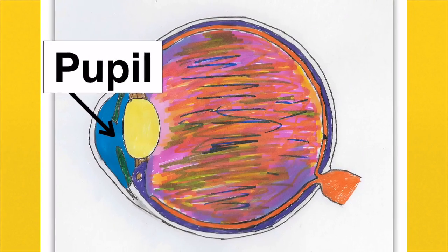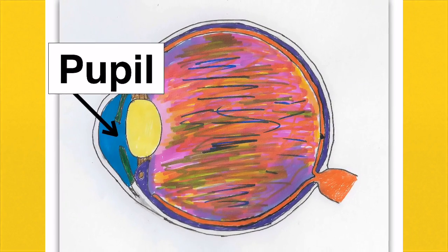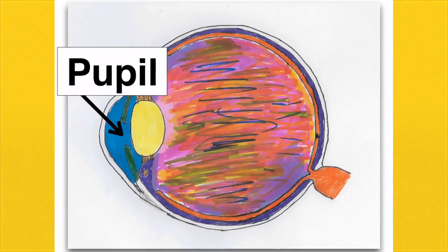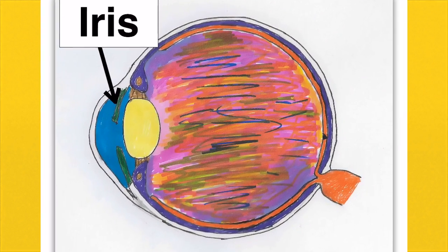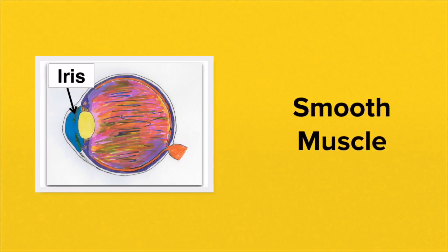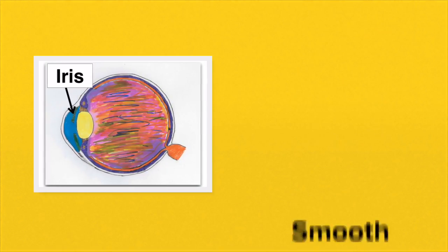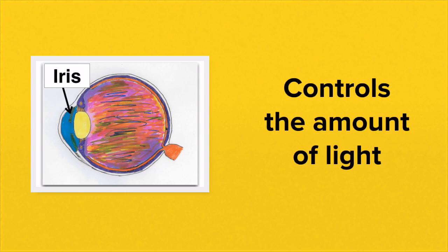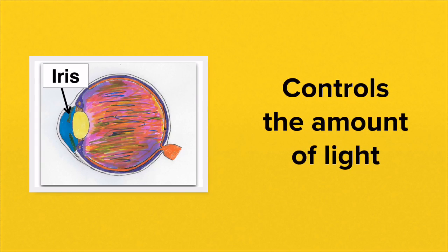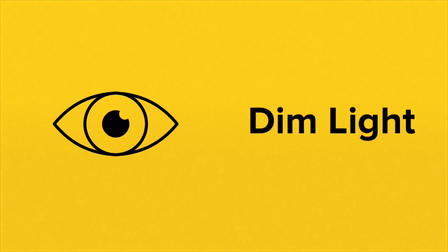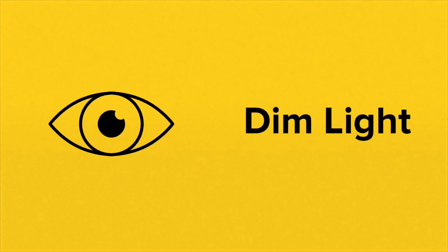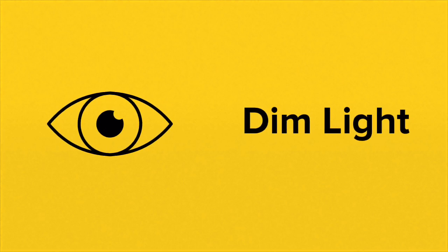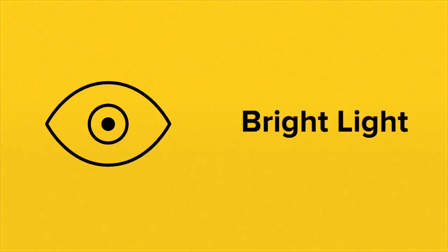At the front of the eye we have a pupil — it's just really a hole in the iris. The iris is the coloured part of your eye and it's actually a layer of smooth muscle. It's responsible for controlling the amount of light entering the eye. The iris controls the size of the pupil. The pupil is usually large in dim light and small in bright light.